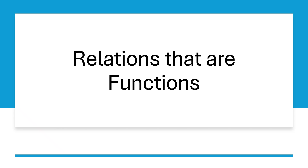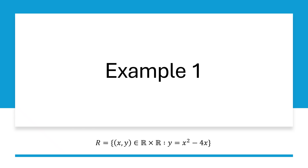In this video, we are taking a look at a few examples of relations that are actually functions and how to prove this. For our first example, we are going to start with a relation R defined on the real numbers, and it says x is related to y if they satisfy this equation — if we can write y as x squared minus 4x. Now how do we test if this is a function or not?